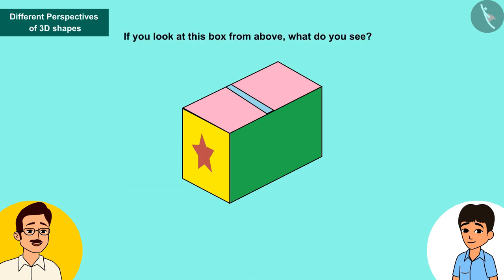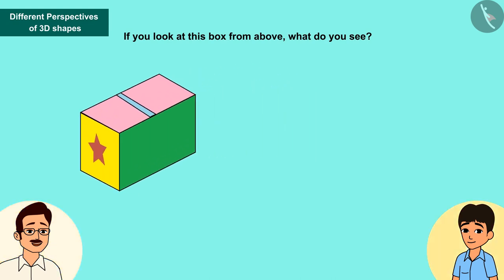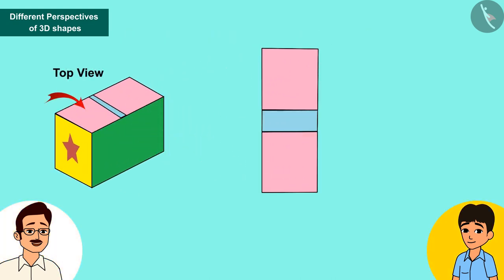If you look at this box from above, what do you see? I only see a rectangle when viewed from above.